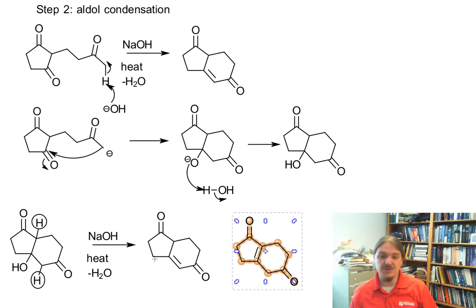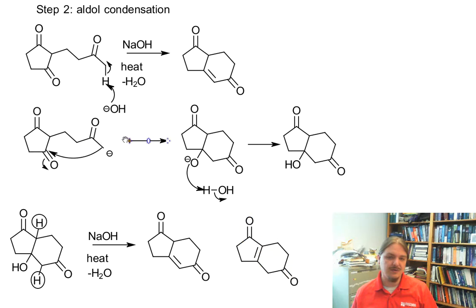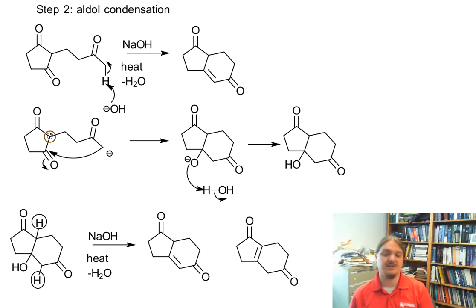Most folks, in order to avoid the two possible products, will have additional substituents in places. For example, if there's another alkyl group here, or another alkyl group at this spot, or another alkyl group over here, that would limit the choices for deprotonation in the final step. This concludes my video on the Robinson annulation. Thank you for watching.